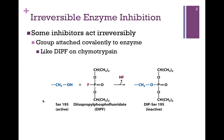In one such example, a group might be attached covalently to the enzyme, specifically to an active site residue that is key in catalysis. Here's the example of chymotrypsin, which can be permanently inactivated by transferring a group from diisopropyl phosphofluoridate (DIPF) to the active site serine residue. After the DIP group is transferred, the oxygen on the serine can no longer act as a nucleophile.